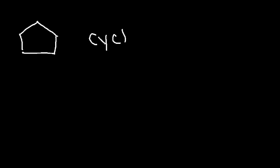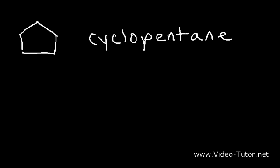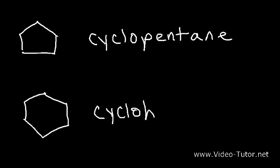There are two other common shapes you need to be familiar with. This is called cyclopentane, since it's a ring with five carbons. And the one that looks like a hexagon is known as cyclohexane.